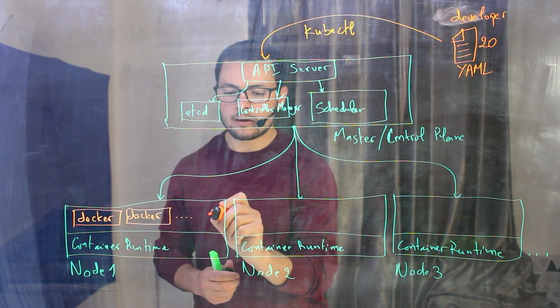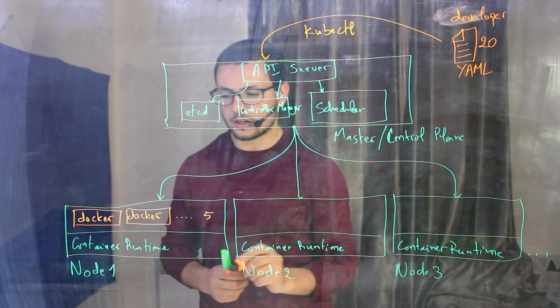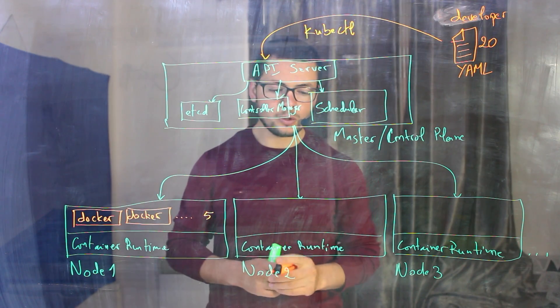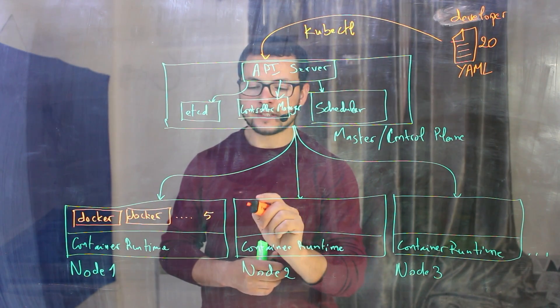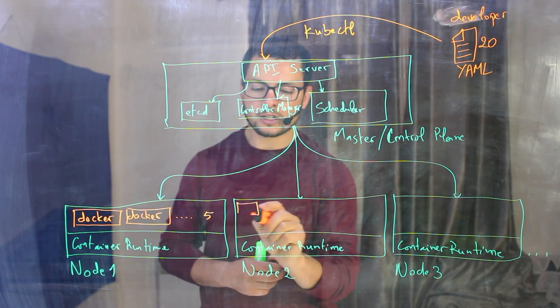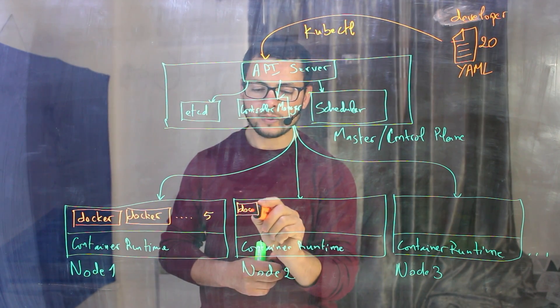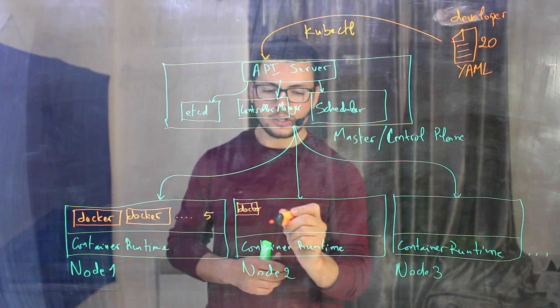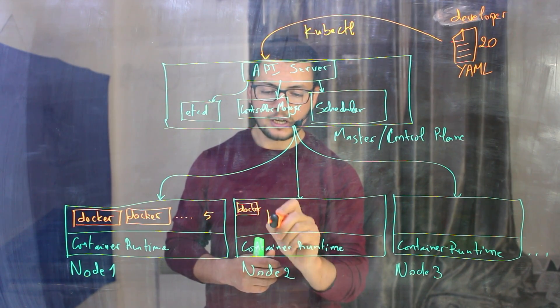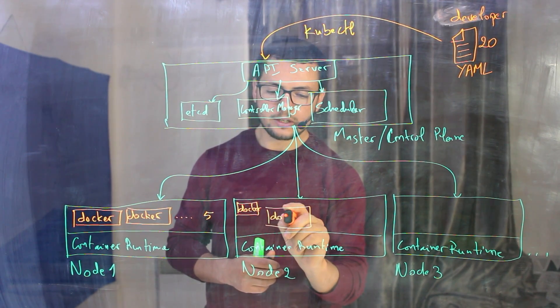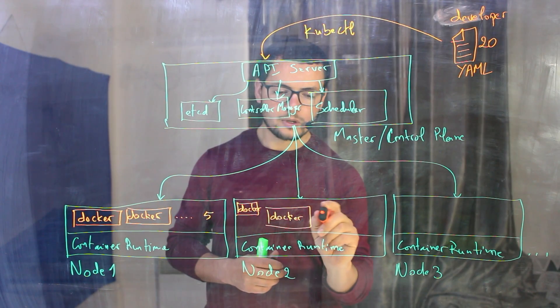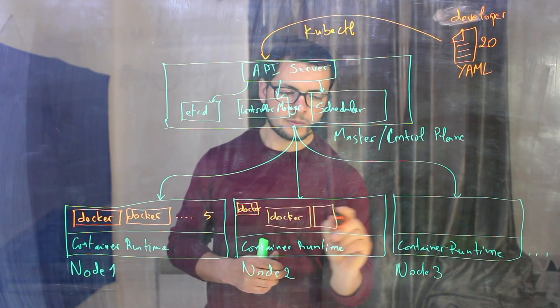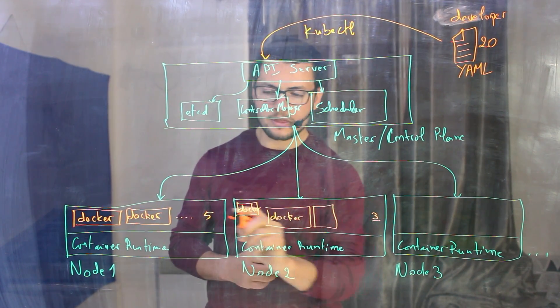Maybe here I have five containers running and in the second node, because maybe I have already some other docker containers running. I don't have as much space as the first node. So maybe here I can only deploy, let's say, three docker containers.